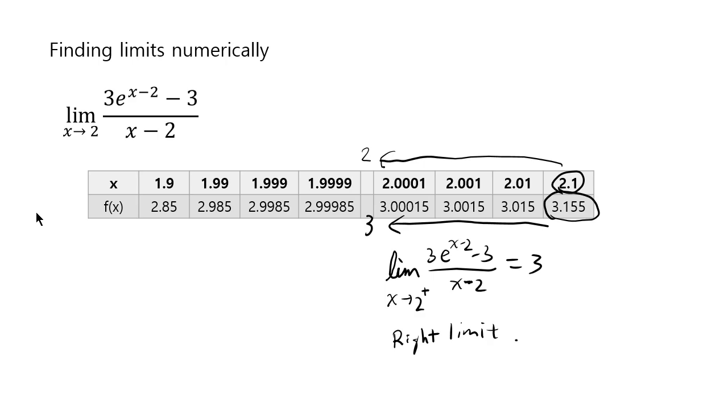What about this side? We also have 1.9, 1.99, 1.999, 1.9999. So you get closer and closer to 2, right? But from the left. So here, x is approaching 2 from the negative side, whereas here x is approaching from 2 from the positive side. So this right side of the table is x approaching 2 plus, whereas on the left side of the table, I see that x is approaching 2 from the left. I hope you know that 1.9999 is much closer to 2 than 1.9.